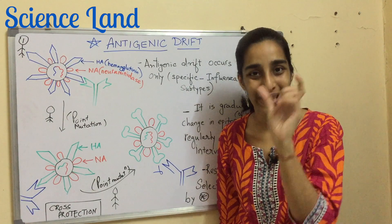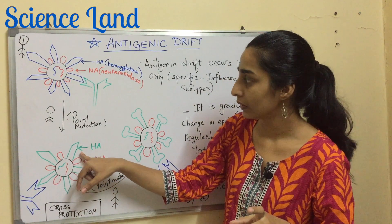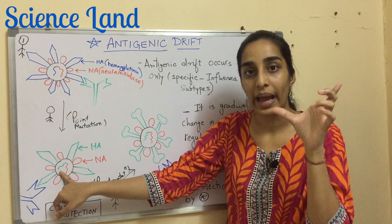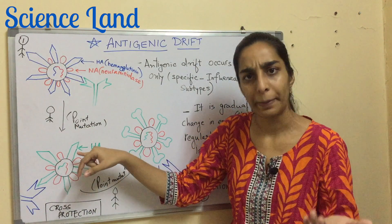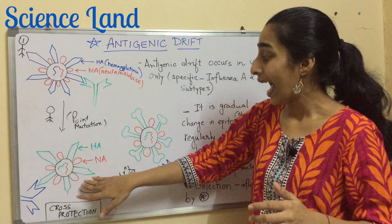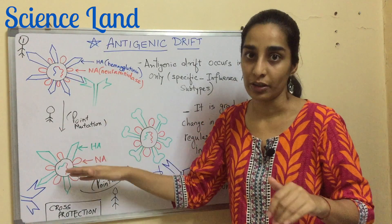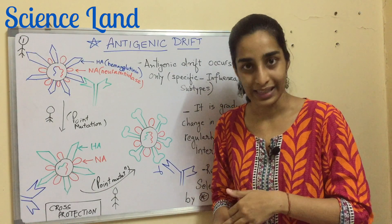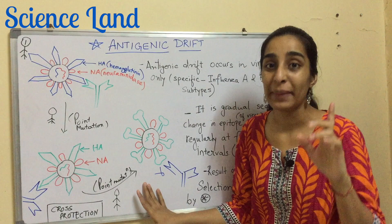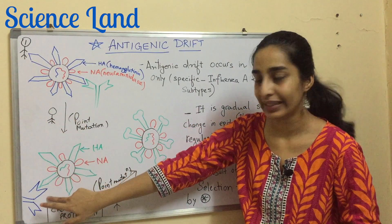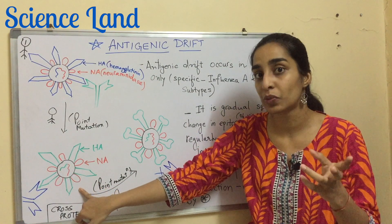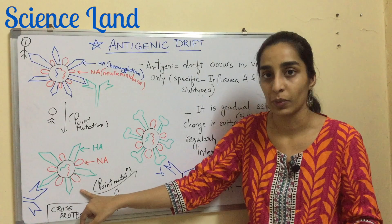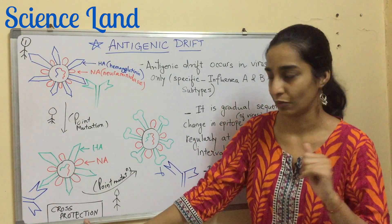The point mutation is not in the epitope sequence. The blue HA gene becomes a green HA gene, but since the mutation is not in the epitope sequence, the antigenic determinant remains the same. A second person also has the antibody, so even though the virus has changed a little, the antibody neutralizes it. The second person's antibody, raised against the original strain, still provides protection against this mutated version — this is known as cross protection.